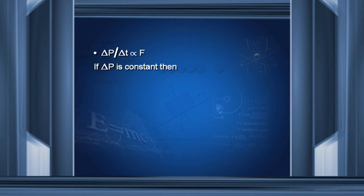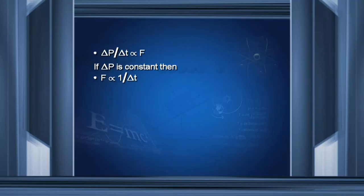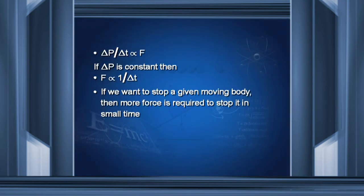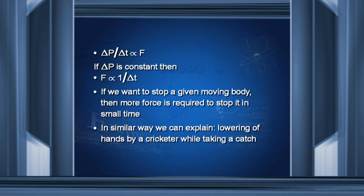Since delta P upon delta T is directly proportional to F, if delta P is constant — meaning mass and change in velocity are both constant — then force is inversely proportional to time. This means if we want to stop a given body within a shorter interval of time, we have to apply more force. This explains why a cricketer lowers his hands while taking a catch — by doing so, he increases the time period, and since force is inversely proportional to time, he has to apply lesser force.